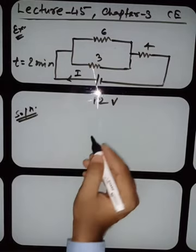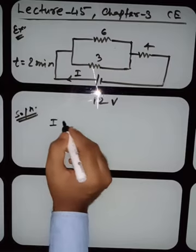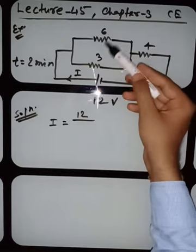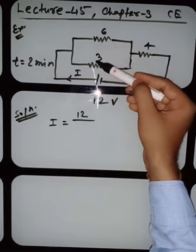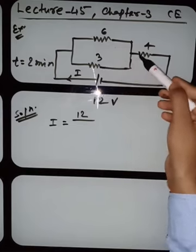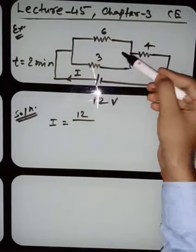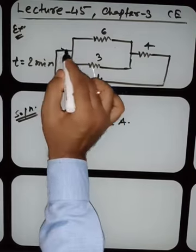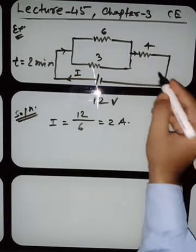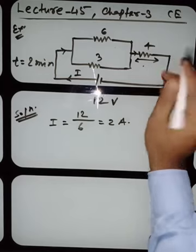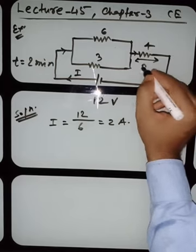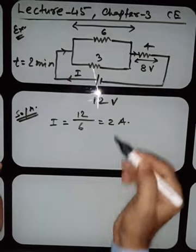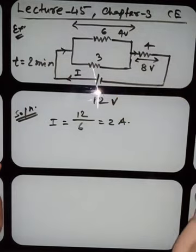First, find the current. The 6-ohm and 3-ohm resistors are in parallel: their equivalent resistance is (6×3)/(6+3) = 18/9 = 2 ohm. In series with 4 ohm, total resistance is 2+4 = 6 ohm. Current I equals 12/6 equals 2 ampere. With 2 ampere flowing, voltage drop across 4 ohm is 2×4 equals 8 volts, leaving 4 volts across the parallel combination.